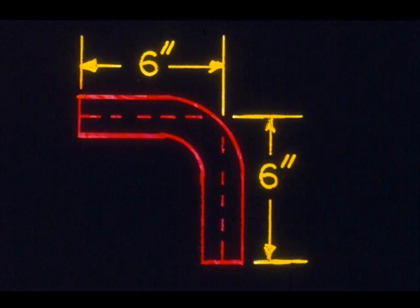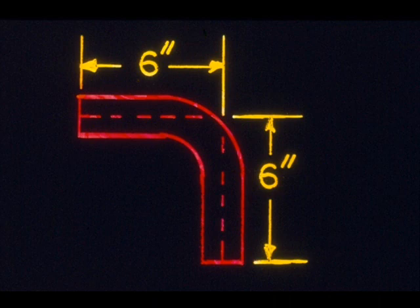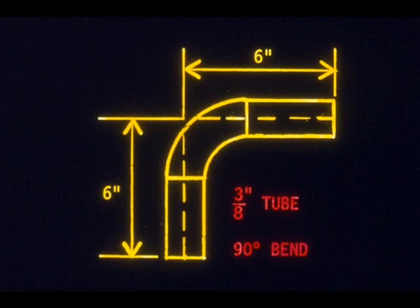Let's use this example sketch to show you exactly how to correctly figure the exact length of the tubing and where to make the bends. We have a sketch of a piece of tubing. It will measure six inches from each end to the center of the bend. The total of the two dimensions is twelve inches. Let's assume that this tubing is three-eighths of an inch outside diameter, and it must be bent in the middle at a ninety-degree angle.